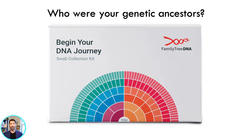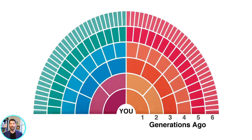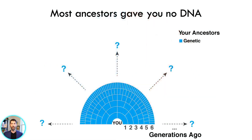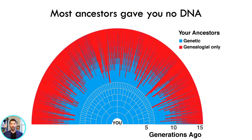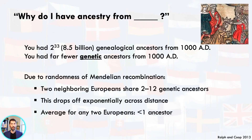To illustrate this another way, let's look at the chart that comes with our company's DNA swabbing kit. It's a genealogy shaped like an onion. You're at the center with your two parents in the first layer, your four grandparents in the second layer, and so on, all the way back to six generations. Beyond six generations ago, most of your ancestors contributed no DNA to you at all — those are the red genealogical-only ancestors. So you had 8.5 billion genealogical ancestors from 1000 AD, but far fewer genetic ones — only a few thousand. And due to the randomness of Mendelian recombination, two neighboring Europeans share on average about two to twelve genetic ancestors.